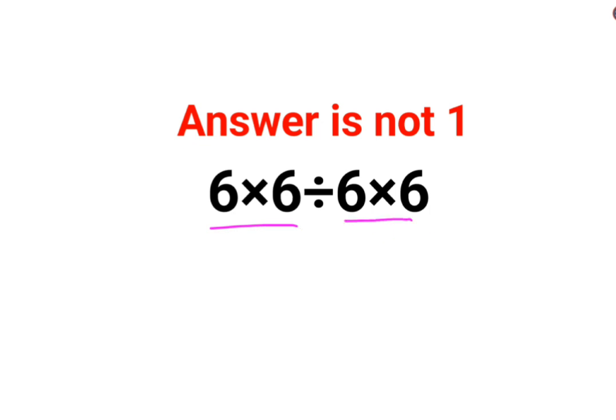A lot of people thought that let's do it this way: 6 into 6 is 36, here also we get 36, and then you divide and get the answer as 1. That is incorrect.